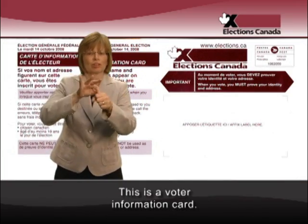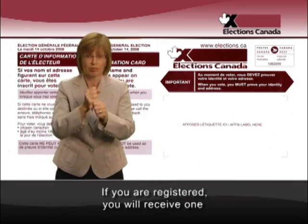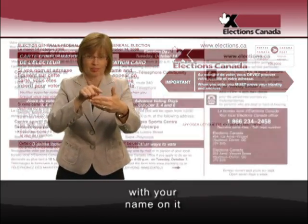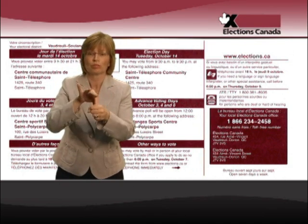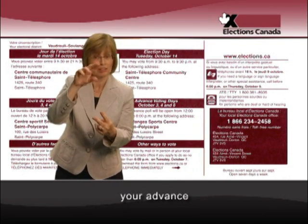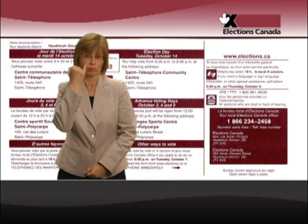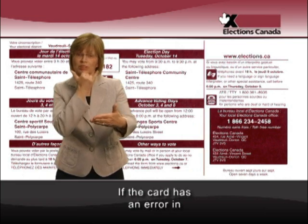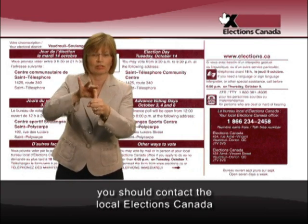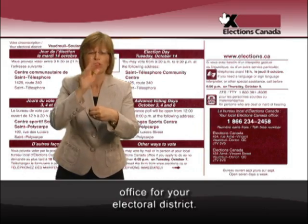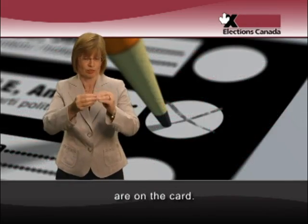This is a voter information card. If you are registered, you will receive one with your name on it well before Election Day. It shows the addresses of your advance and Election Day polling stations. If the card has an error in your name or address, you should contact the local Elections Canada office for your electoral district. The address and phone number are on the card.